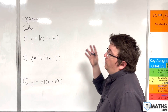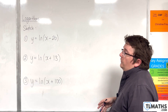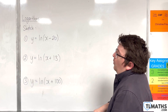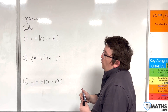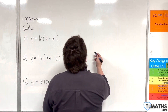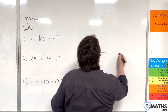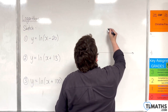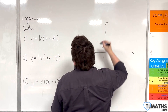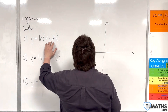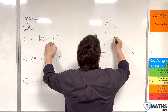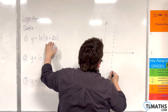In this video, I want to go through three sketches. First one: y equals the natural log of x take away 20. First of all, identify where the vertical asymptote is. That's when the bracket is 0, so that would be when x is equal to 20.